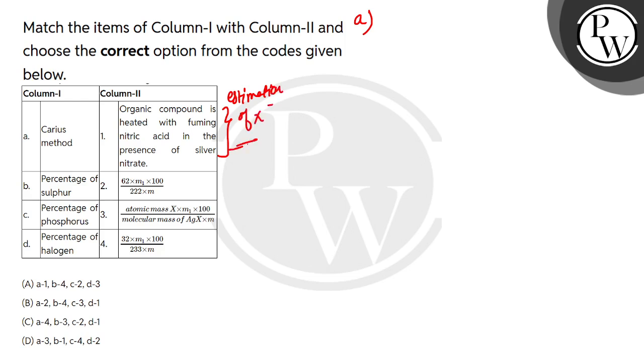And how do we do the estimation of halogen? Carius method. So A will match the first one.